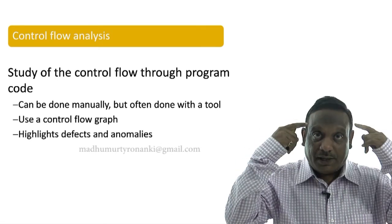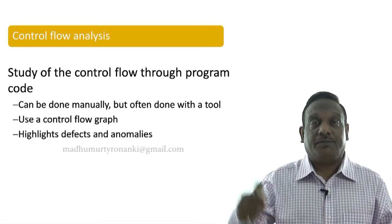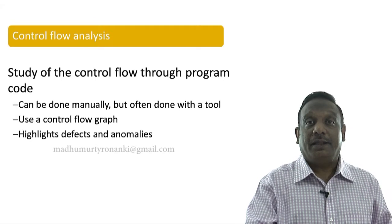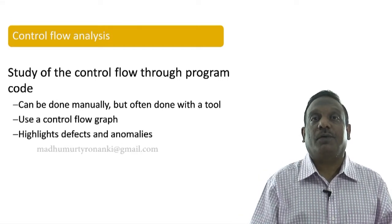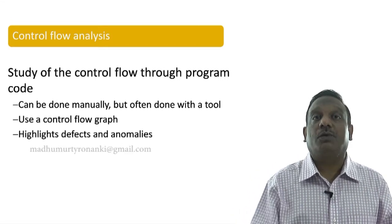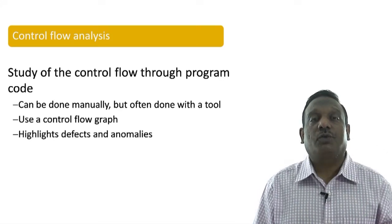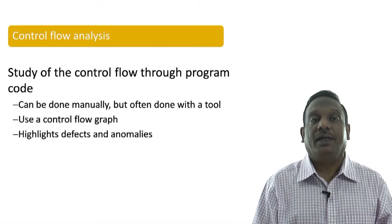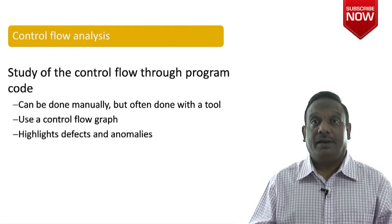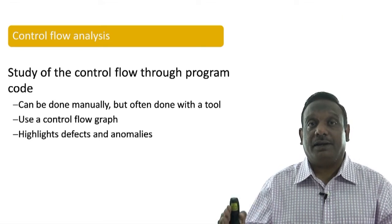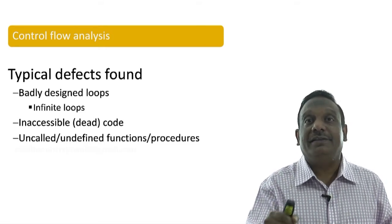It can be done manually — we have to apply our brains, look at the code, carefully examine it, and based on our knowledge of good control flow design, find those defects. But they can be better done with a tool. To analyze the control flow of a program, it is always better to have a control flow diagram representing the source code. Using control flow studies we can highlight defects and anomalies in the logic. Typical defects found include badly designed loops.